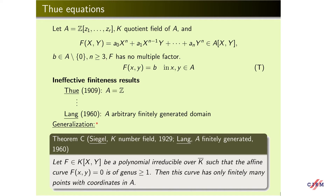Finally, Lange proved in 1960 that for arbitrary finitely generated domains, the Thue equation has only finitely many solutions. In fact, Lange deduced this as a special case from a more general result, which is a generalization of Siegel's theorem from 1929. Siegel proved this for the case when K is a number field, and Lange extended it to when K is an arbitrary finitely generated field: if F is an absolutely irreducible polynomial such that the affine curve has genus at least one, then this curve has only finitely many points with coordinates in A.